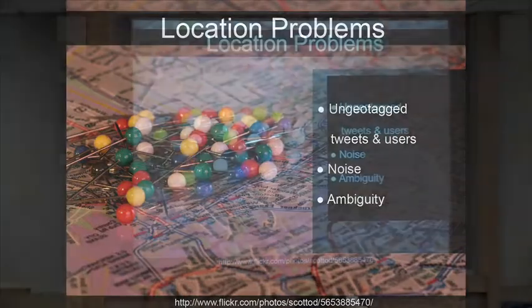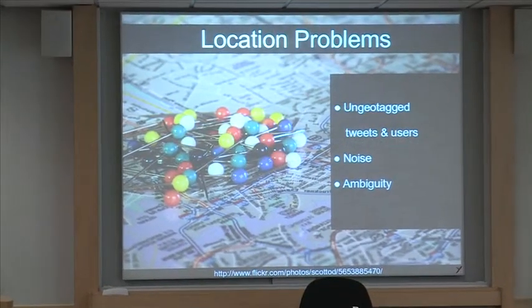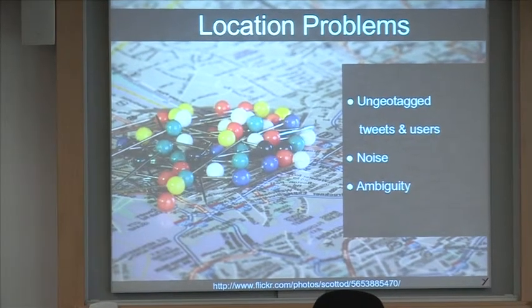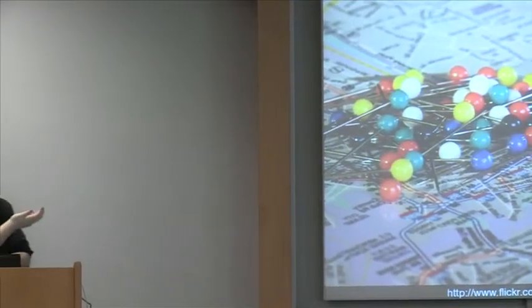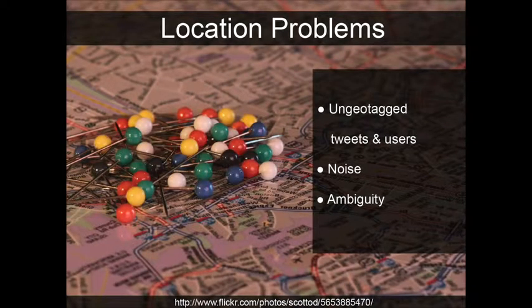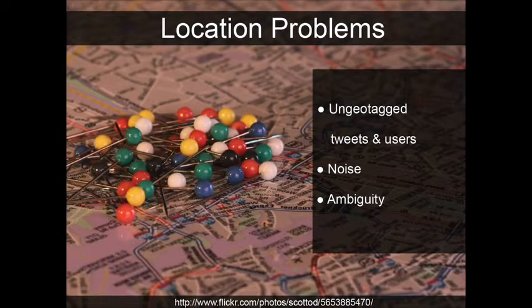The first problem is ungeotagged tweets and users. Very few users use Twitter geotagging, mainly due to privacy reasons, and this forces us to use additional criteria to place locations for these tweets. Furthermore, there is the problem of the high amount of noise existing in Twitter — a lot of irrelevant information that normally makes message comprehension difficult. The last problem, which we shall see later, is ambiguity: how to know the correct place a text refers to when there are places with the same name.